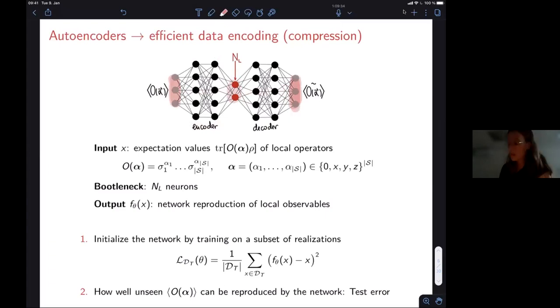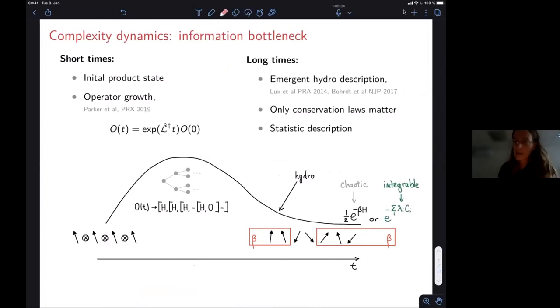And the network, so the parameters of the network are set by showing the network several of such data sets and asking it to reproduce the input as good as possible so that it matches the output by going through this bottleneck. And then we test our network by showing it some unseen sets of expectation values and asking how well can it reproduce them at the output. And then essentially test, compare the reproduced expectation value with respect to the original ones for a given latent space or the bottleneck size. And we'll benchmark our approach by looking here at the simplest situation, so in this physical setup in the steady state, but essentially first asking let's say if I show it thermal expectation values maybe at different temperatures but same Hamiltonian.